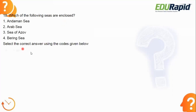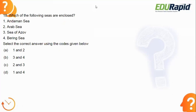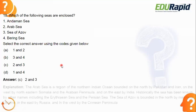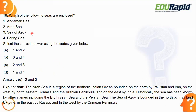Next: which of the following seas are enclosed? Enclosed means covered with boundaries — coastlines on all sides. The answer is option C — number 2 and 3, which are the Arabian Sea and the Sea of Azov. The Andaman Sea and Bering Sea are not enclosed. The Arabian Sea is bounded on the north by Pakistan and Iran, on the west by northeastern Somalia and the Arabian Peninsula, and on the east by India.